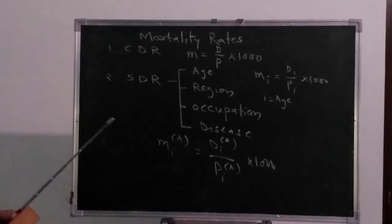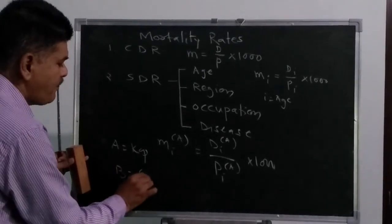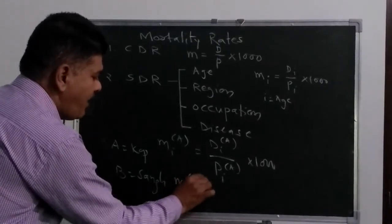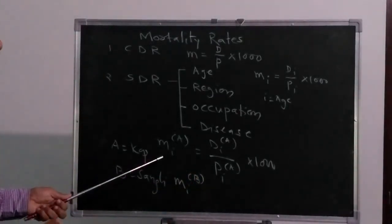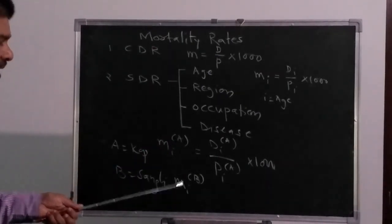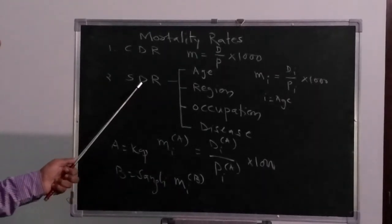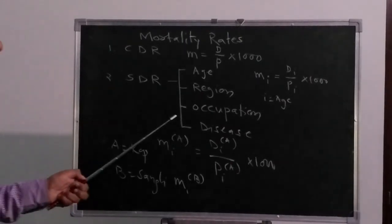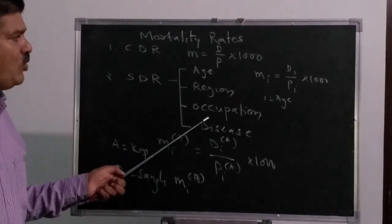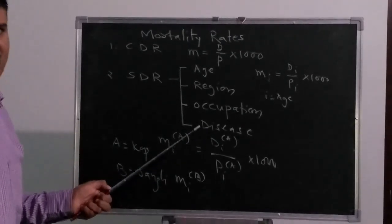Suppose I take A as Kolapo and B as Sun U district. I can calculate both MiA and MiB and compare the mortality rates of a particular age group in Kolapo district and in Sun U district. To make such comparisons, we need specific death rates. We stop here, and in the next session we will discuss occupation-specific death rate and disease-specific death rate. Thank you.